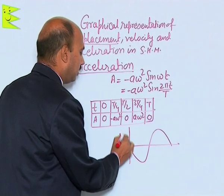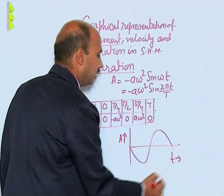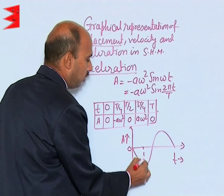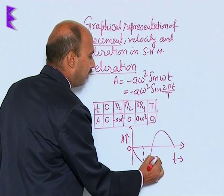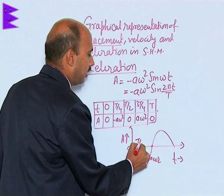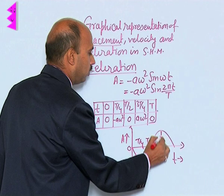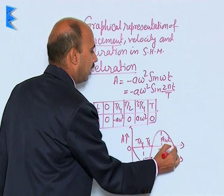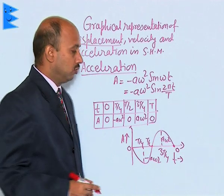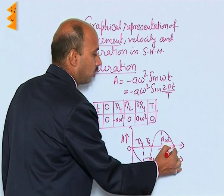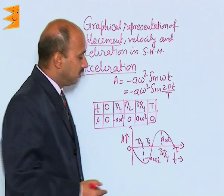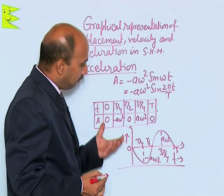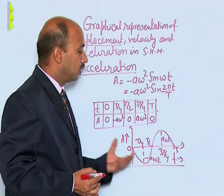In this graph, time is on the horizontal axis. The value at 0 is 0, this is minus a omega square, this is 0 at T/4, this is T/2, this is 3T/4 where the value is a omega square, and this is 0 at T — the total time period. So this is the graph of acceleration amplitude versus time.